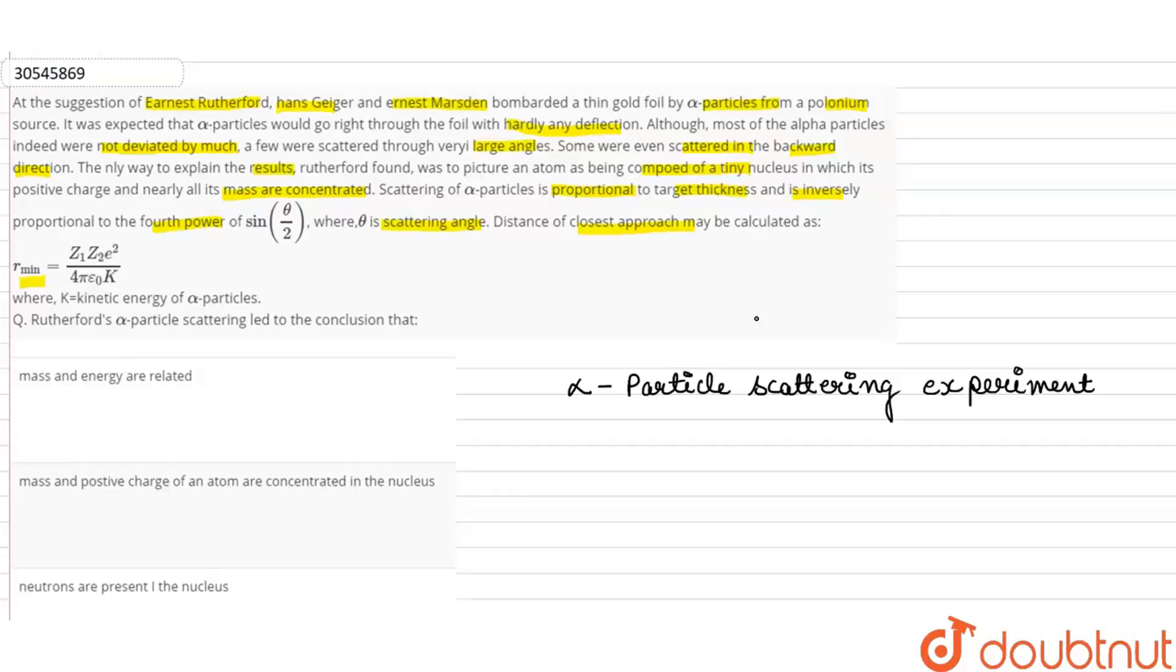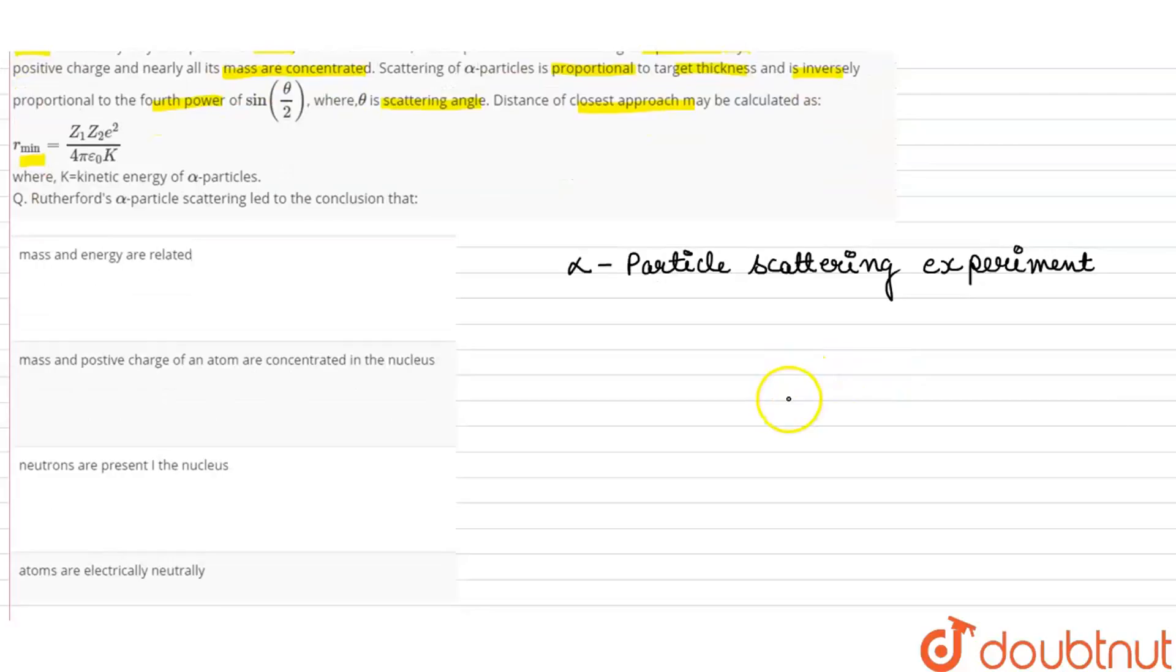So what can we conclude with these three observations? We can conclude that at the center of the atom, a highly positively charged substance is present. This positive charge present at the center of the atom, we call the nucleus.